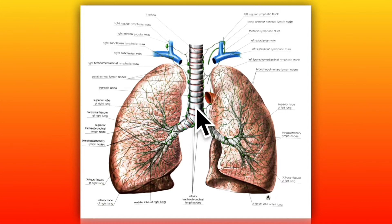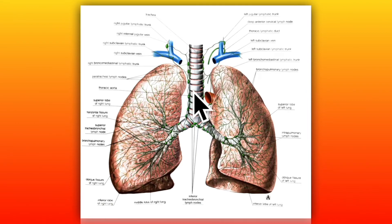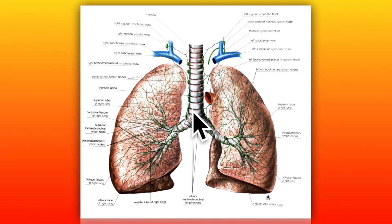Now let's look at the dimensions of the trachea. The trachea is about 10–15 cm long. Its upper half lies in the neck and its lower half in the superior mediastinum. The external diameter measures 2 cm in males and 1.5 cm in females, and the lumen is smaller in living than in cadavers. In the child, the trachea is smaller, more deeply placed, and more movable than in the adult — an important factor to consider while carrying out tracheostomy procedures.